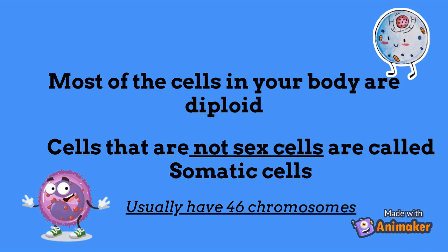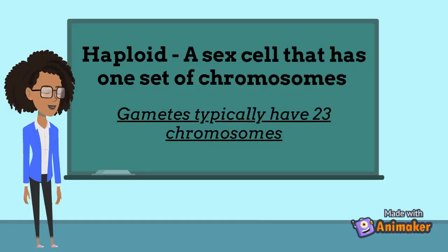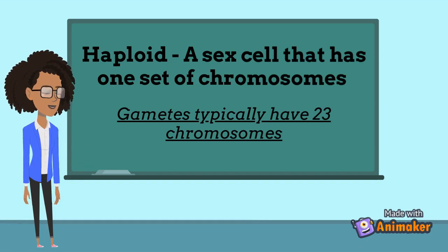Unlike somatic cells, which have two sets of chromosomes and so are called diploid cells with 46 chromosomes. If you want to learn about how somatic cells gain 46 chromosomes, my video on mitosis will be very helpful. But it's really important to remember that most of the cells in your body are diploid, with only the sex cells being haploid. Haploid cells are cells with only one set of chromosomes, and they usually have 23 chromosomes.